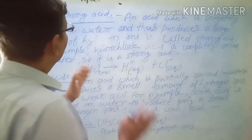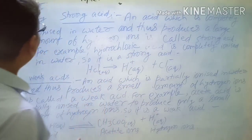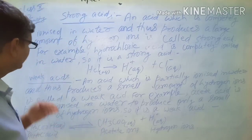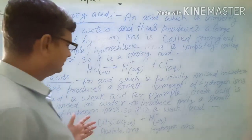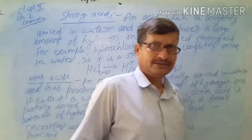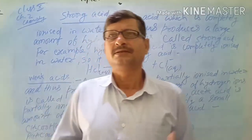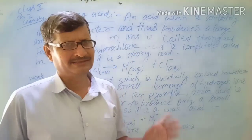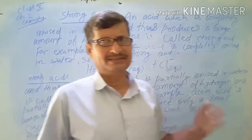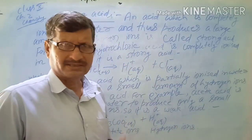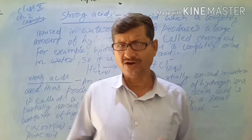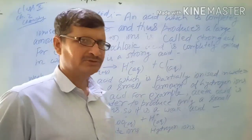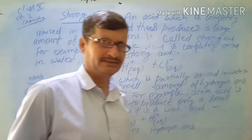You can now understand the difference between strong acid and weak acid. Weak acids are generally naturally occurring acids, such as lactic acid, tartaric acid, citric acid — which is also found in citrus fruits — and oxalic acid. These all are examples of weak acids.